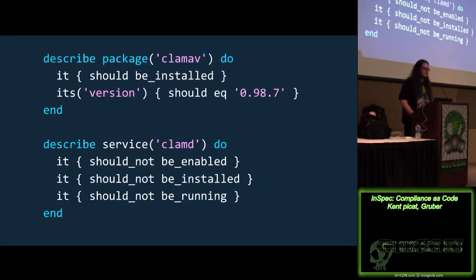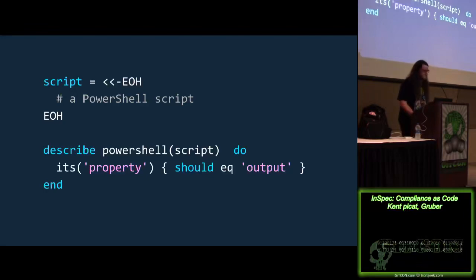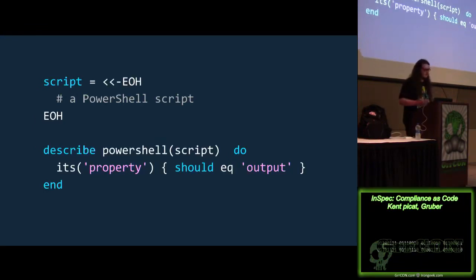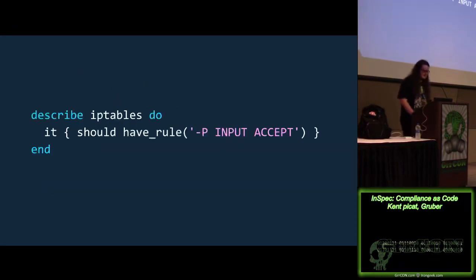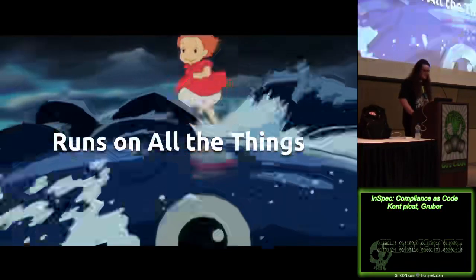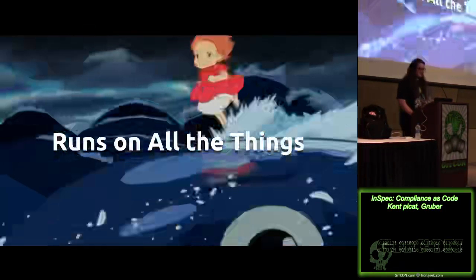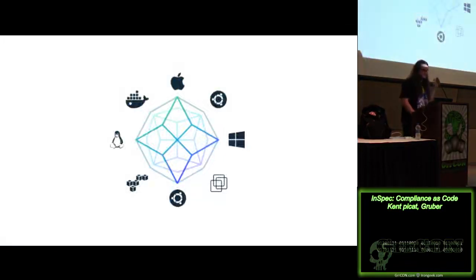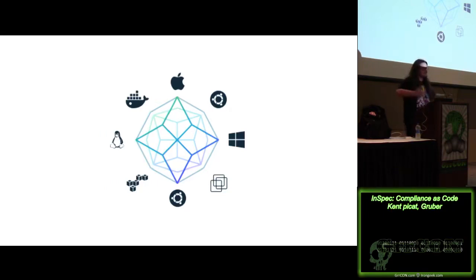It's not just Linux — it's very much built for Windows stuff as well. You can describe many things such as a PowerShell script, hotfix patches, IP tables rules. It runs on all the things, which is fantastic. Whether it's Docker, macOS, Ubuntu, Windows — InSpec is agentless. As long as you have SSH or WinRM, some way to get into the box to see the state of the system, that's all it requires.